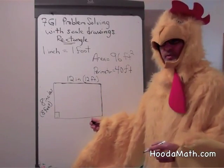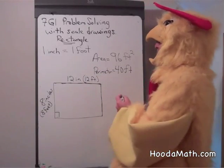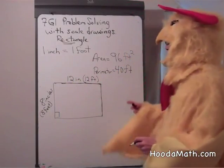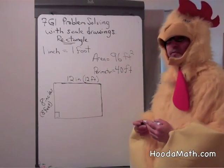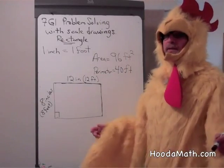So, using the scale drawing to know the actual size of the rectangle, we translate from 1 inch to 1 foot. And we get 96 square feet for the area, and 40 feet for the perimeter. Bawk!